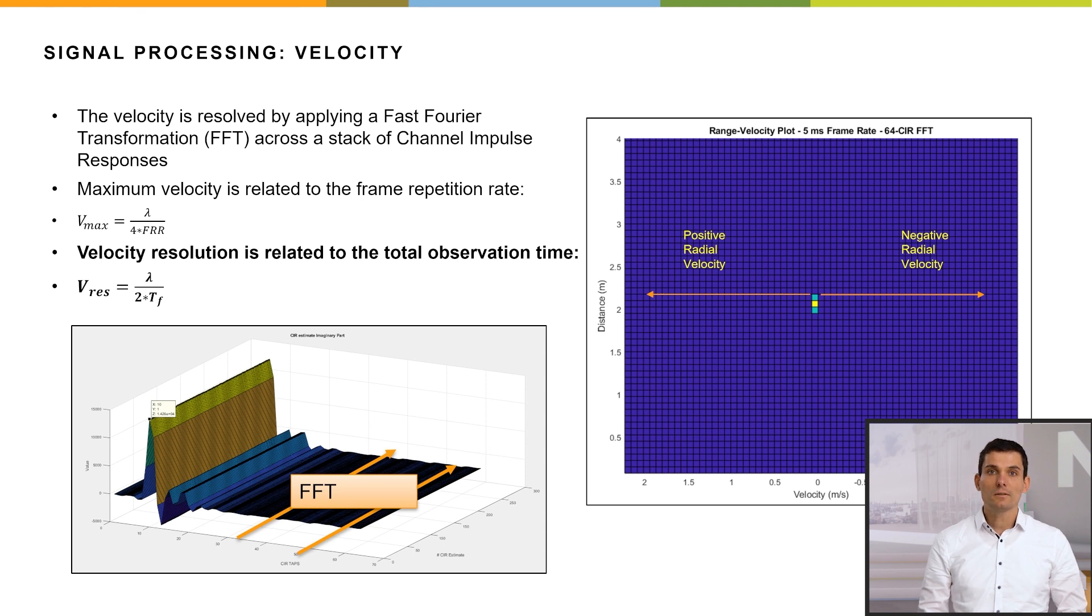As a result, we get a so-called range velocity plot. On the y-axis, we have the distance to the target, and on the x-axis, we see the velocity, which can either be positive or negative.